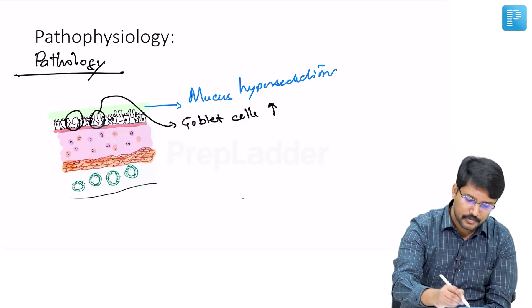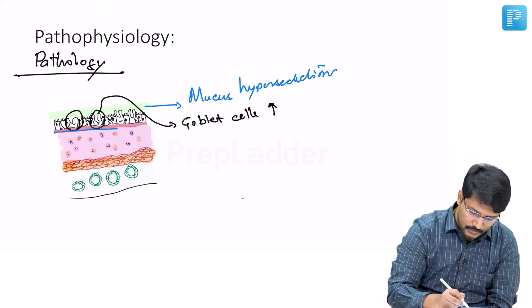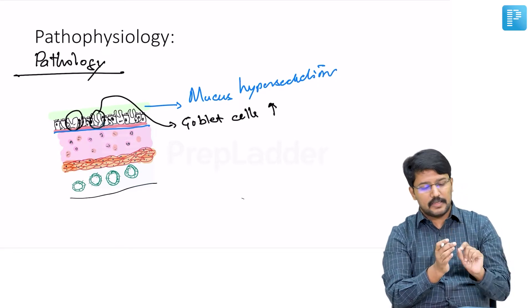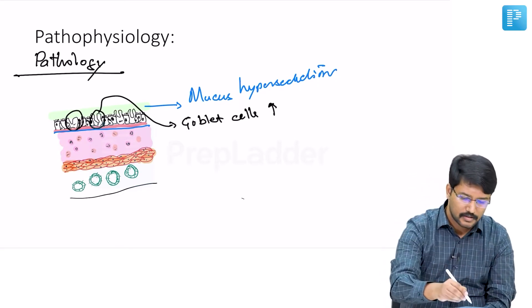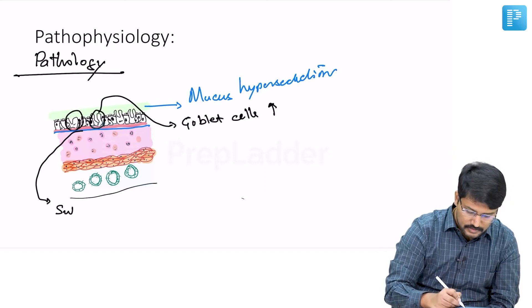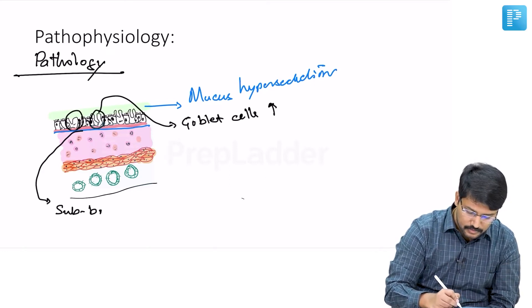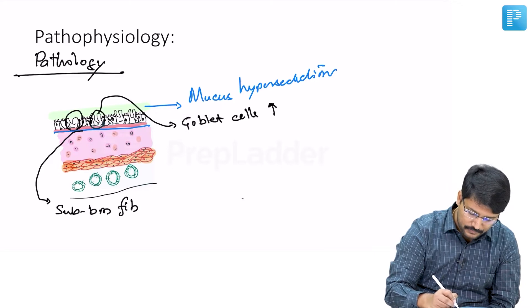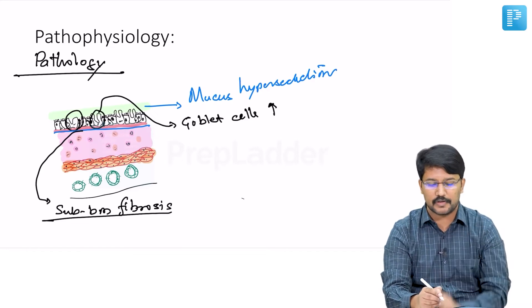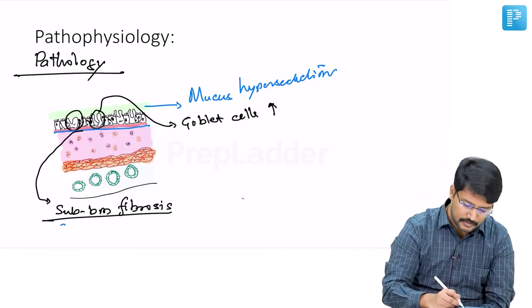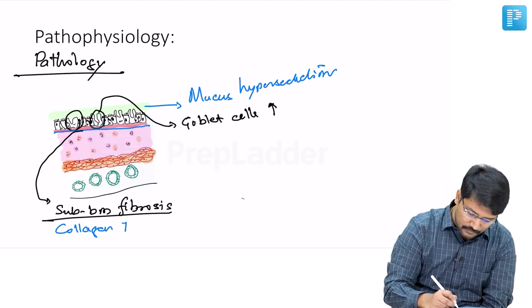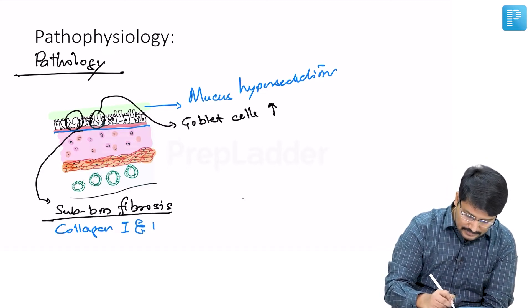The third point is thickening of the basement membrane, precisely because of sub-basement membrane fibrosis. This sub-basement membrane fibrosis is because of the deposition of collagen type 1 and type 3.